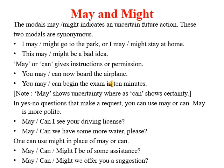Now let us study 'may' and 'might'. The modals 'may' or 'might' indicate an uncertain future action. These two modals are synonymous. For example: 'I may or might go to the park,' or 'I may or might stay at home,' or 'This may or might be a bad idea.' In these sentences, we can use both 'may' or 'might'.